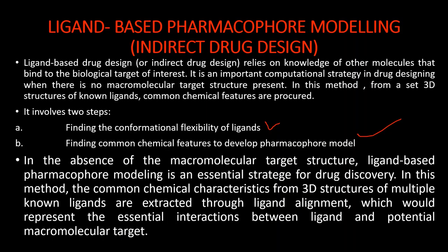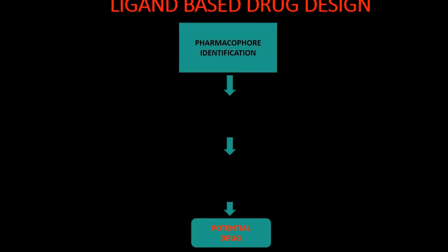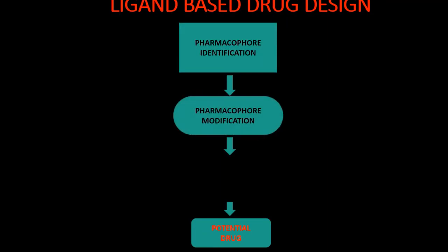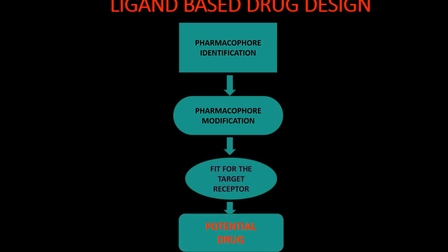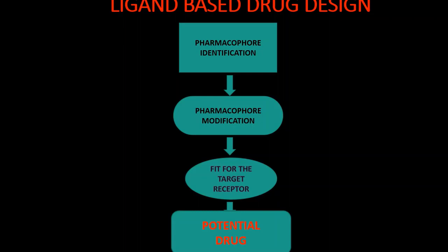These are the following steps in ligand-based drug design: first is pharmacophore identification, second is pharmacophore modification, and third is fitting to the target receptor, and finally identifying the potential drug. It is a simple drug design method: we identify the pharmacophore, make modifications, check how well it binds to the target receptor, and then the drug that shows biological response becomes the potential drug — meaning that drug has shown its biological activity. Thank you.